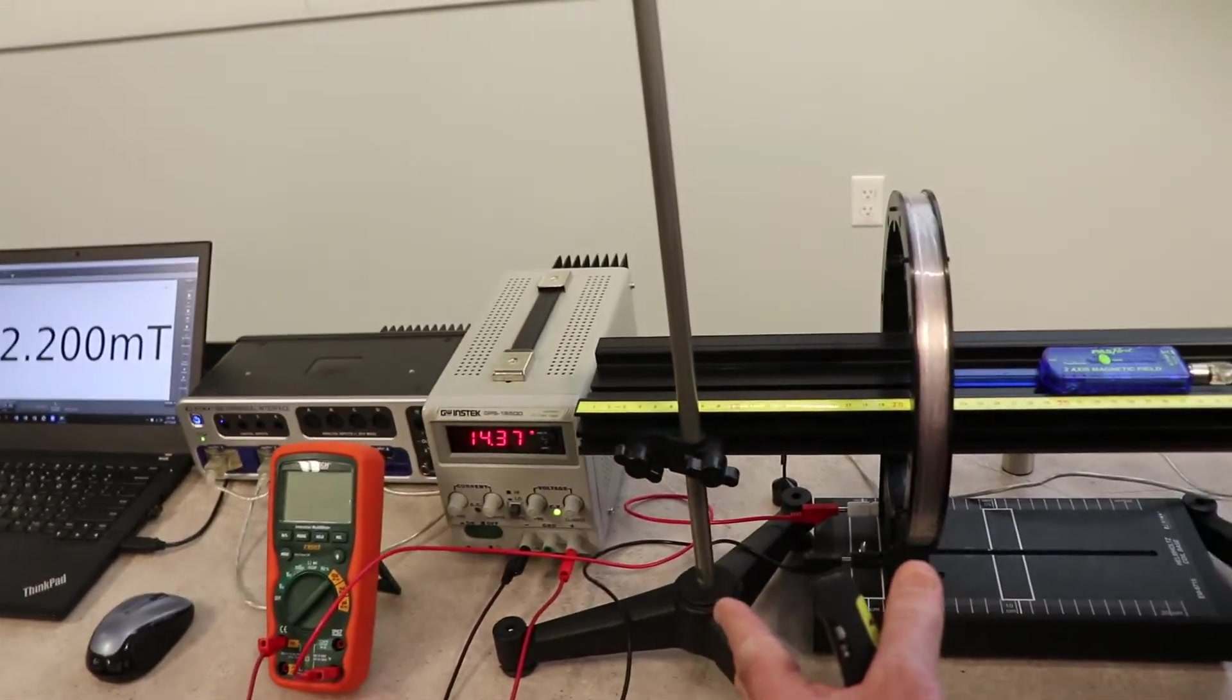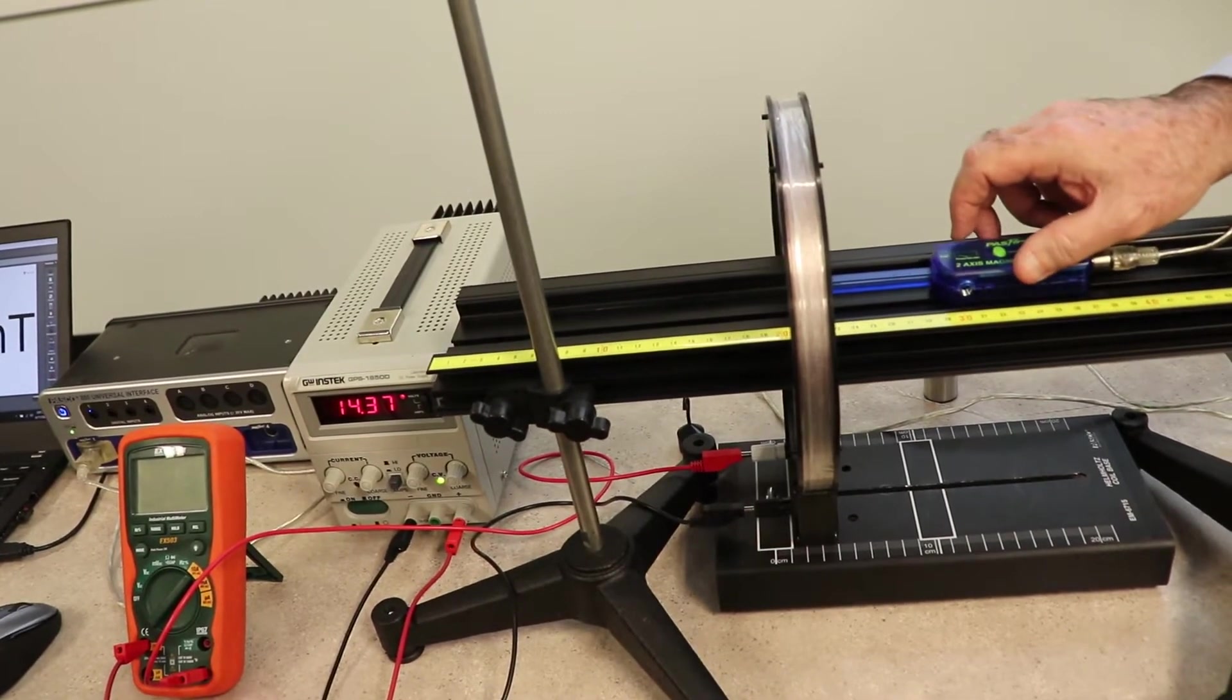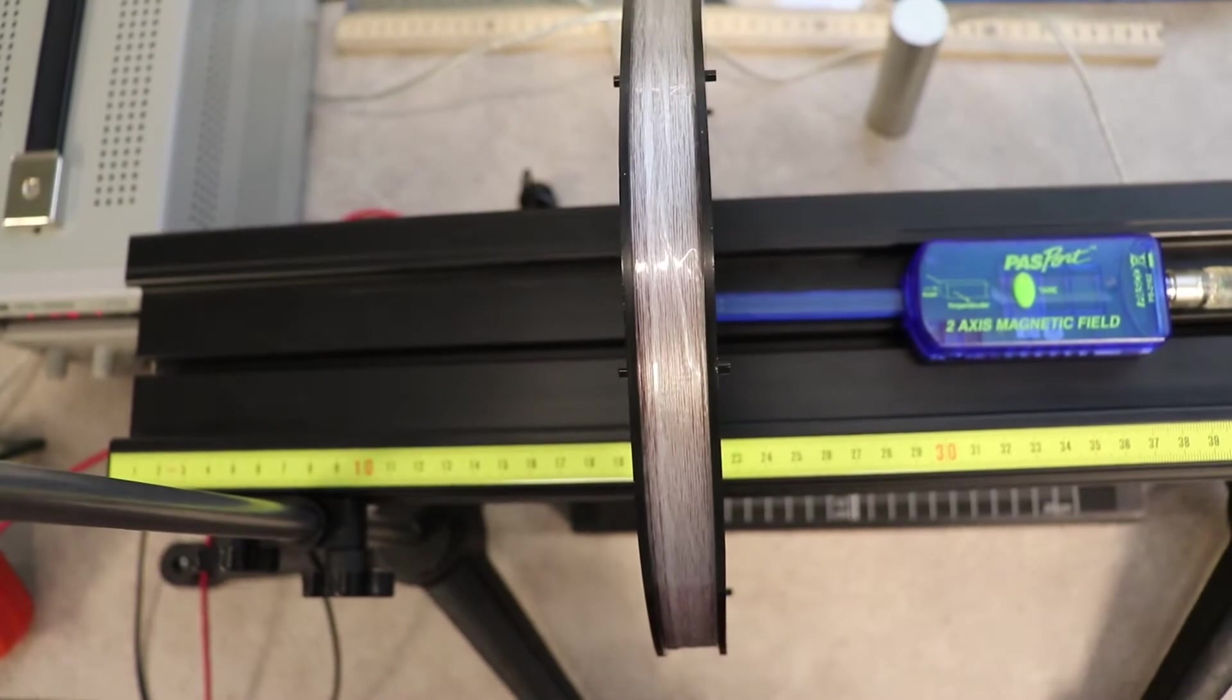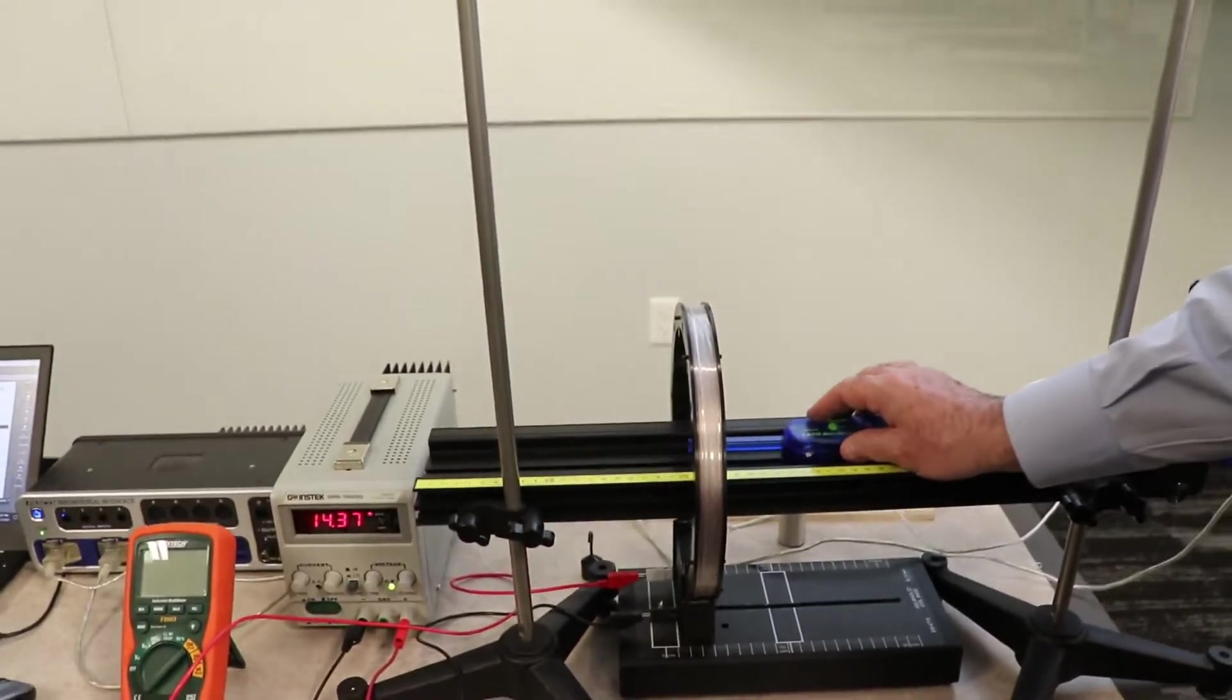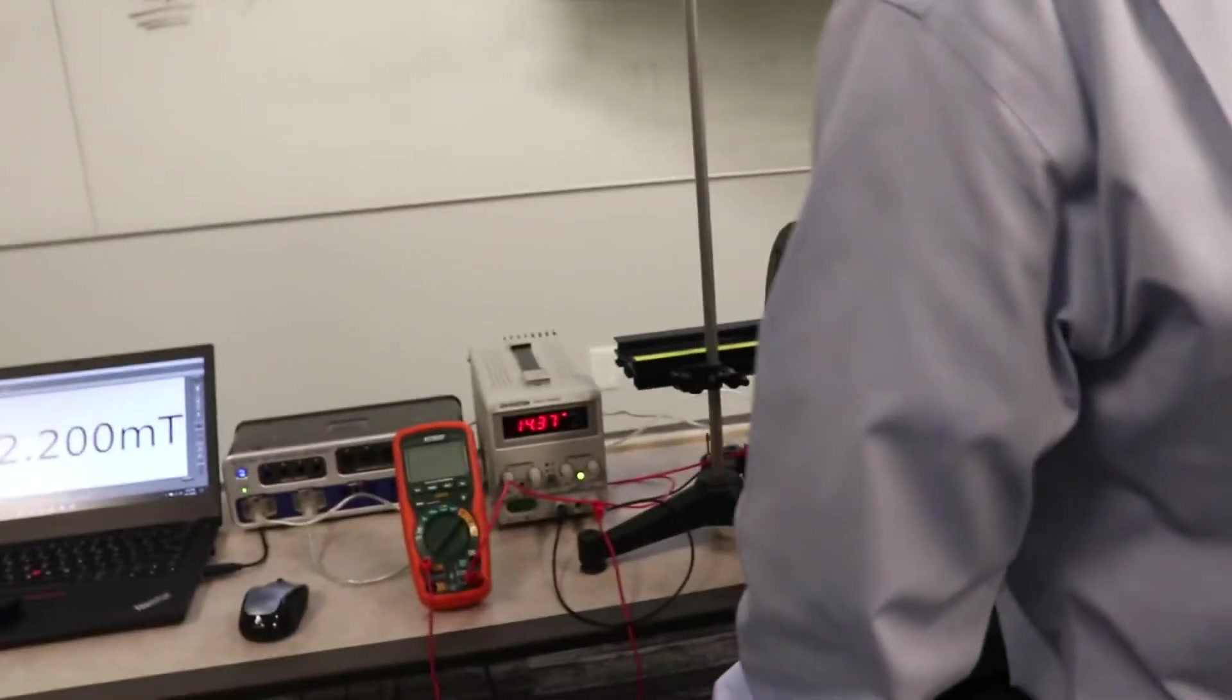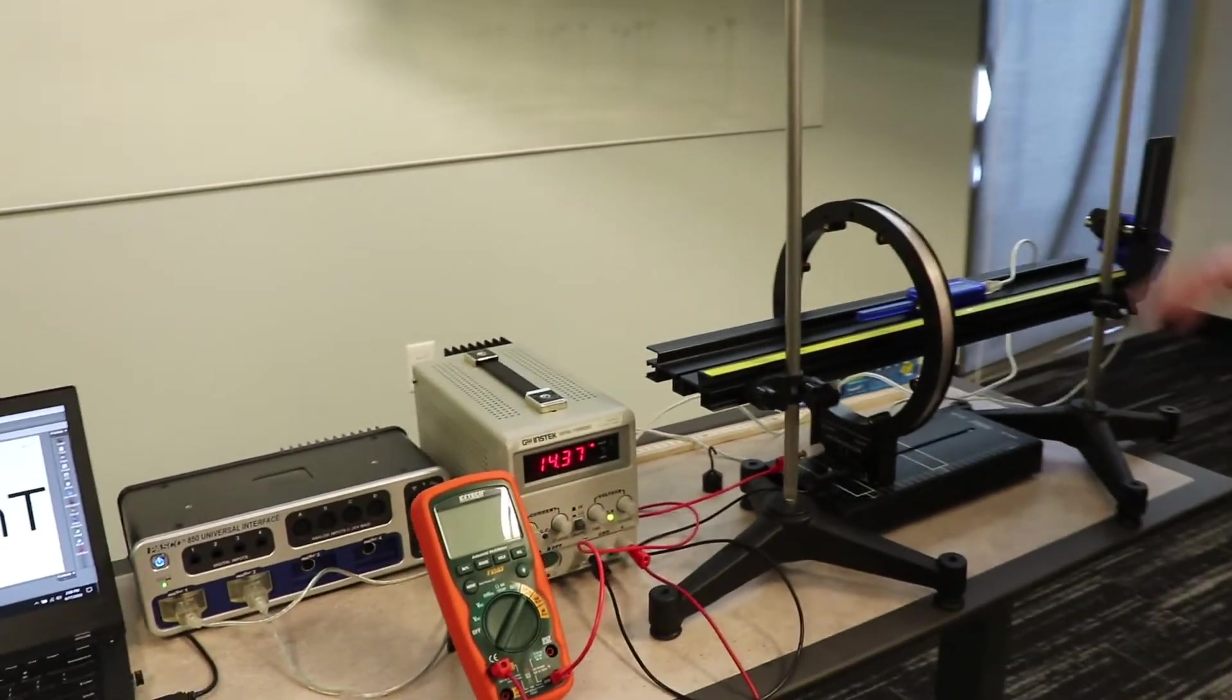I also had to center this whole assembly so the probe is at the coil's center. Actually, this is the center point right here. It looks like it's off to one side - it's been a while since I set this up. I use this rail to guide it back and forth for the second experiment. Let me get it back in the middle again. All right, that looks good.